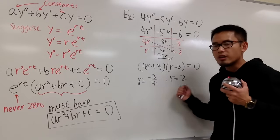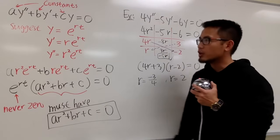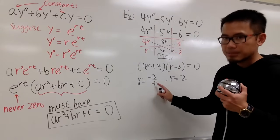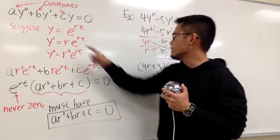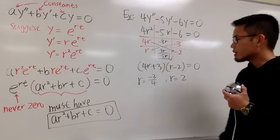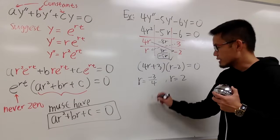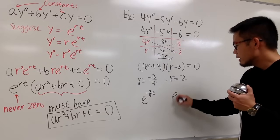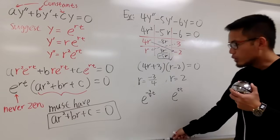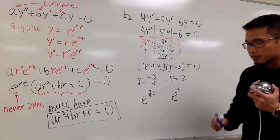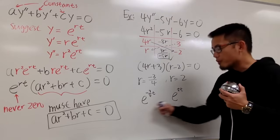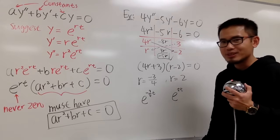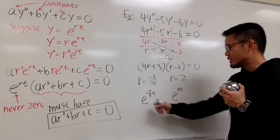We end up with two different r values, so we get two different building blocks for the solution: e to the (−3/4)t and e to the 2t. Let me write these building blocks down. Both of them will satisfy the original differential equation — I'll show you that for the second one, and you can verify the first on your own.